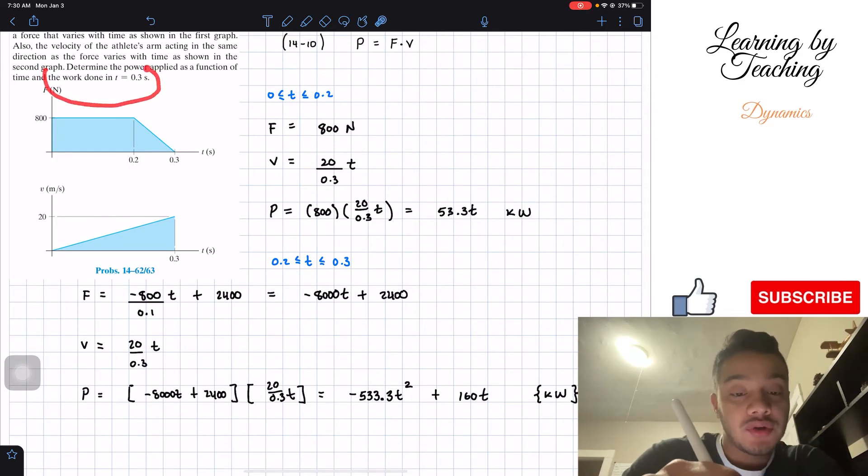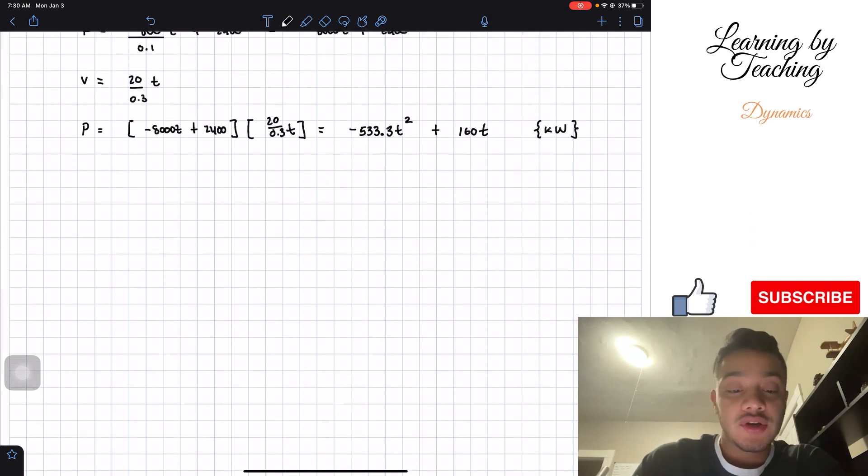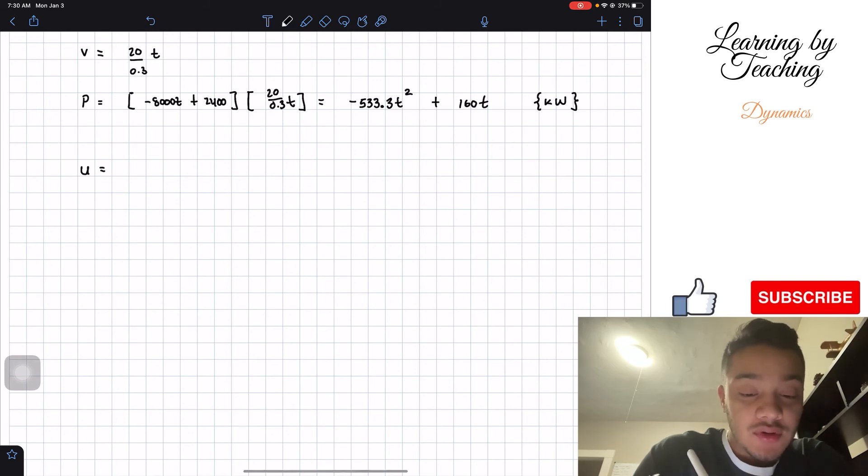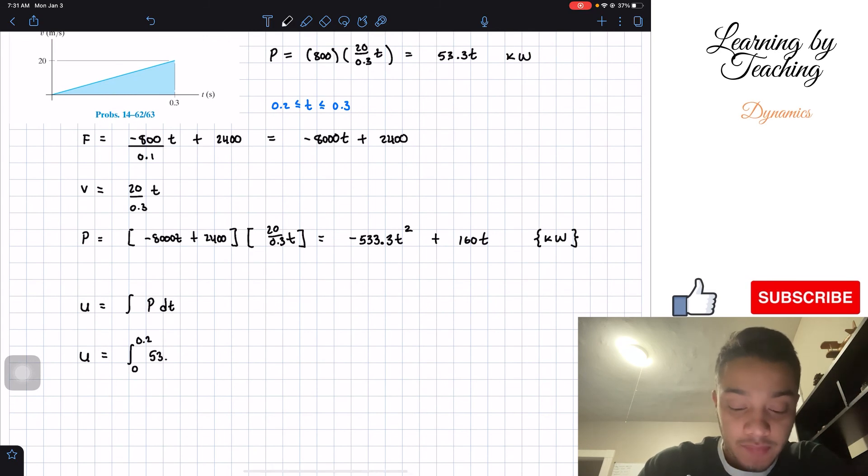And the last thing we have to do is the work done in t equal to 0.3. And in order to do that, well, we have to know that the work done is going to be equal to the integral of the power with respect to time. So if we do that, knowing that we have the function for power, so we got our function for power, but we have two time intervals. So we're going to split this into two integrals. So we're going to have first our integral from 0 to 0.2. And what's the equation for power? Well, it's going to be 53.3 t dt. And then we're going to add the second integral, which belongs to the other time interval from 0.2 all the way to 0.3 of our equation, which is negative 533.3 t squared plus 160 t and all this times dt.